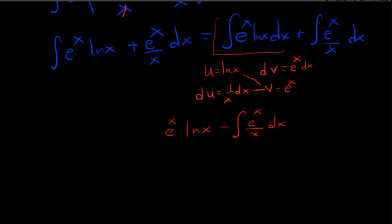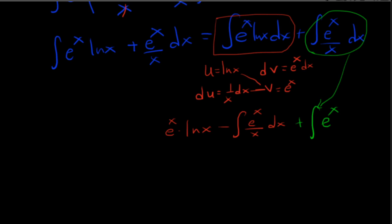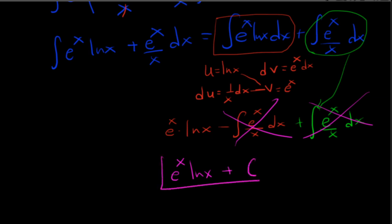After applying integration by parts we have e to the x ln of x minus the integral of e to the x over x dx. We also have the second integral, plus the integral of e to the x over x dx, which came down from earlier. Thankfully these two e to the x over x integrals cancel each other out. So we're just left with e to the x ln of x, and because it's an integral we include plus C. That is our final answer.